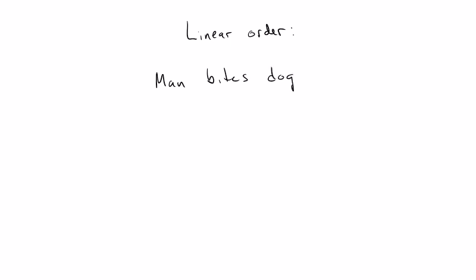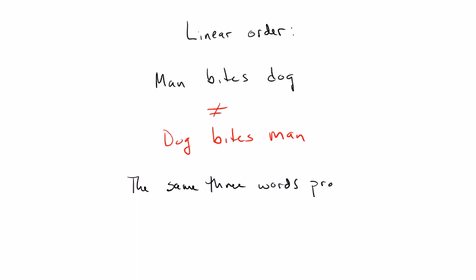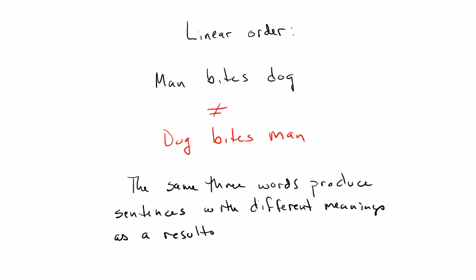What linear order refers to can be seen clearly in the contrast between two sentences: 'man bites dog' and 'dog bites man.' These two obviously don't mean the same thing, even though both use the same three words. What gives them different interpretations is the linear order of those three words — when 'man' precedes 'bites' and 'dog' follows, the dog is bitten; when 'dog' precedes and 'man' follows, the man is bitten. Linear order determines the difference in meaning between these two sentences.